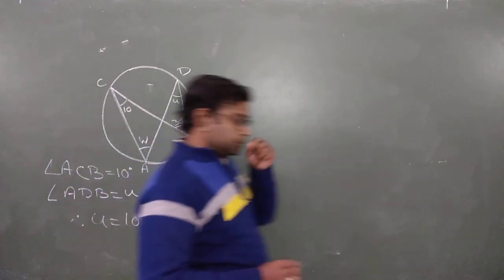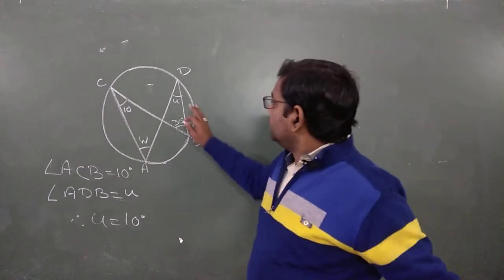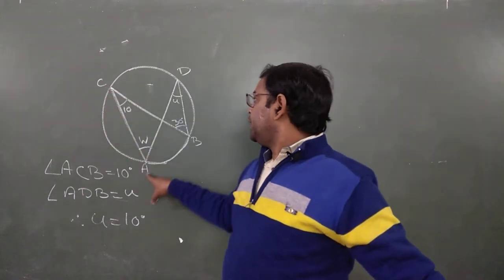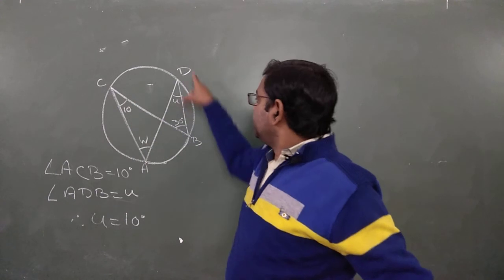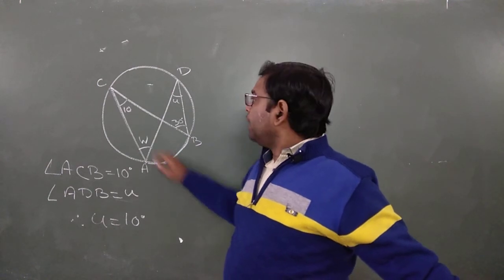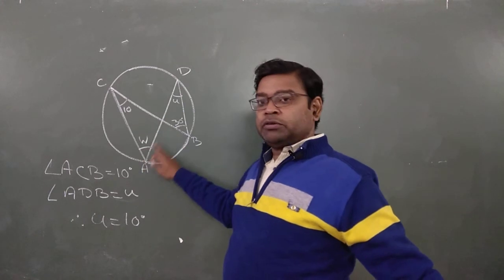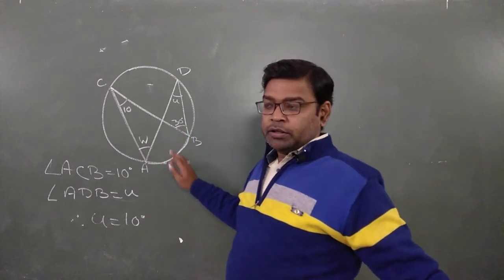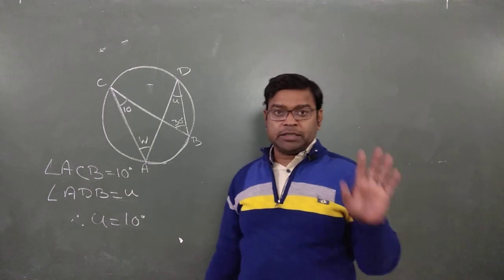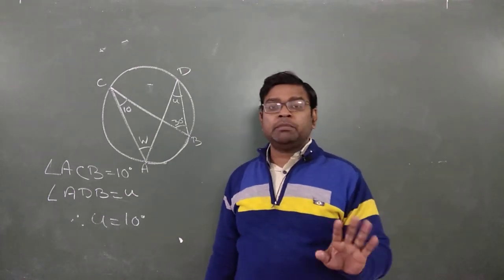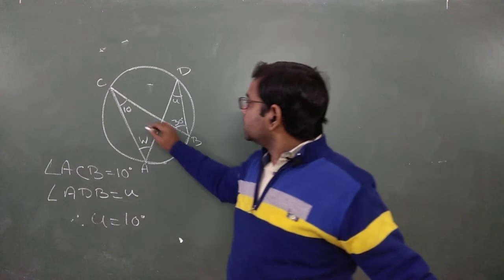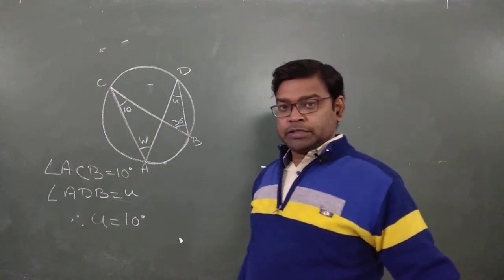Now come to the lower part. Here CD is another arc. From this arc, angle CAD is angle W, and angle CBD is 30 degrees. We have two different angles on the circumference of the circle having the common arc CD. This means these two angles are equal to each other, so W equals 30 degrees. Remember all the circle angle properties discussed in the previous video.